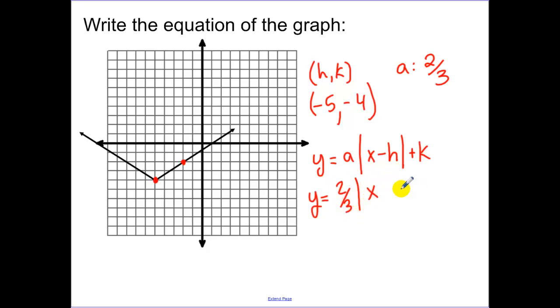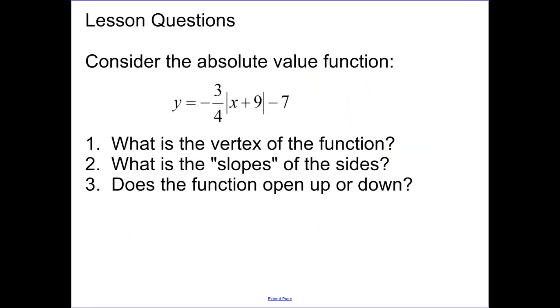2 thirds, x minus a negative 5, plus k. Oh, plug in your k. I'm trying to rush through this. All right, so we have a minus 4. So that's our equation there. Okay, there are your lesson questions, so please make sure the summary and your lesson questions are submitted on time.